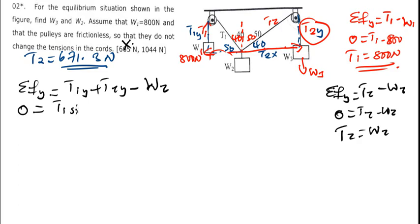T1 is T1 sin theta plus T2 sin theta minus this is going to be W2 because we want to find W2. Shift W2 to the other side.